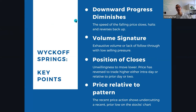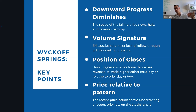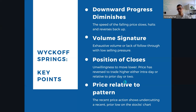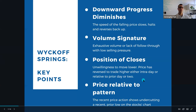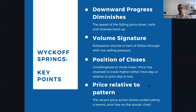The key points when working through a spring: we're looking for downward progress diminishing — the speed of the falling price slows, halts, and reverses back up. That's a rounding out of the bottom. We're also looking at the volume signature: exhaustive volume or lack of follow through with low selling pressure. That shows an unwillingness to move lower, with prices reversing to trade higher either intraday or relative to the prior day or two. Then there's price relative to the pattern — the recent price action shows it undercutting the recent prior low — and in concert with these other aspects, that's when we see the spring come together.